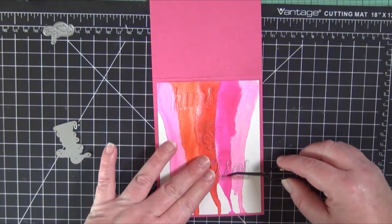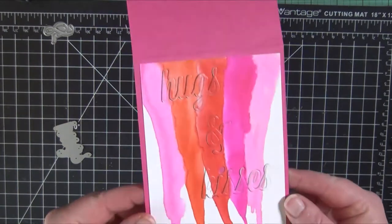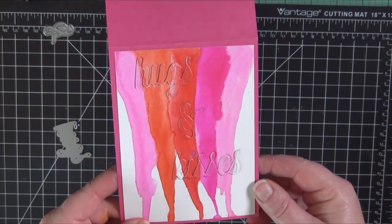And laying in the word hugs right back into where it was previously cut. Voila, there you have it. That's all she wrote folks. As easy as that. You can see a little bit of dimension and it goes right back into where you cut it out.